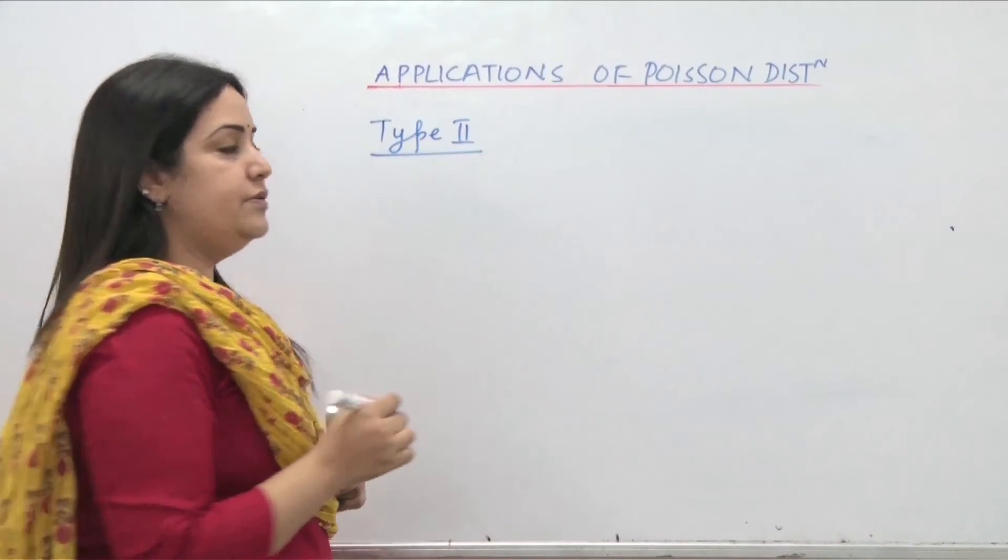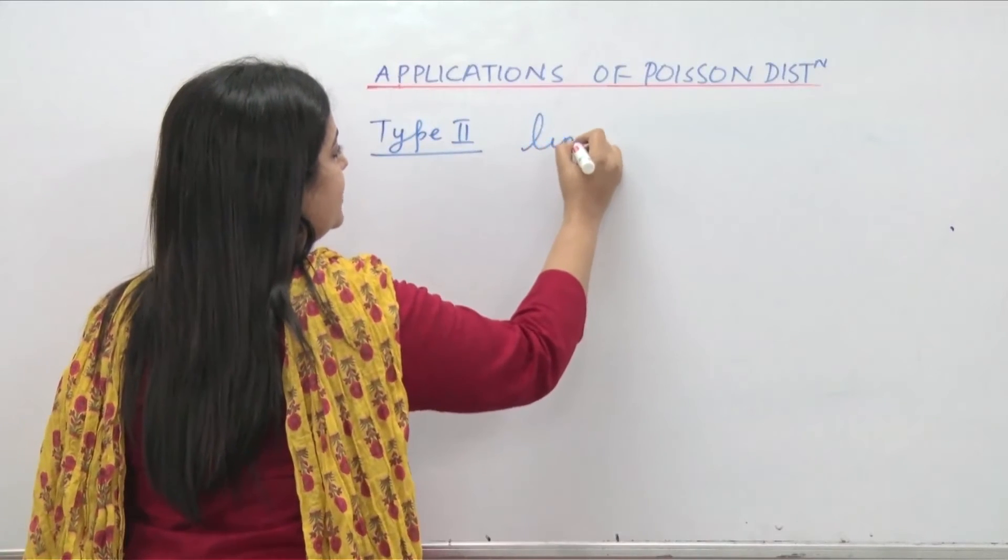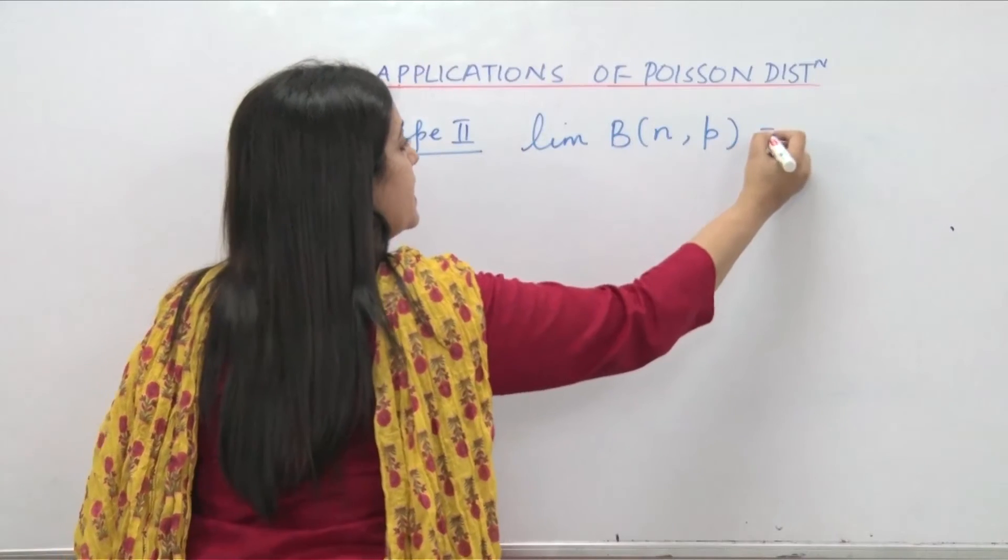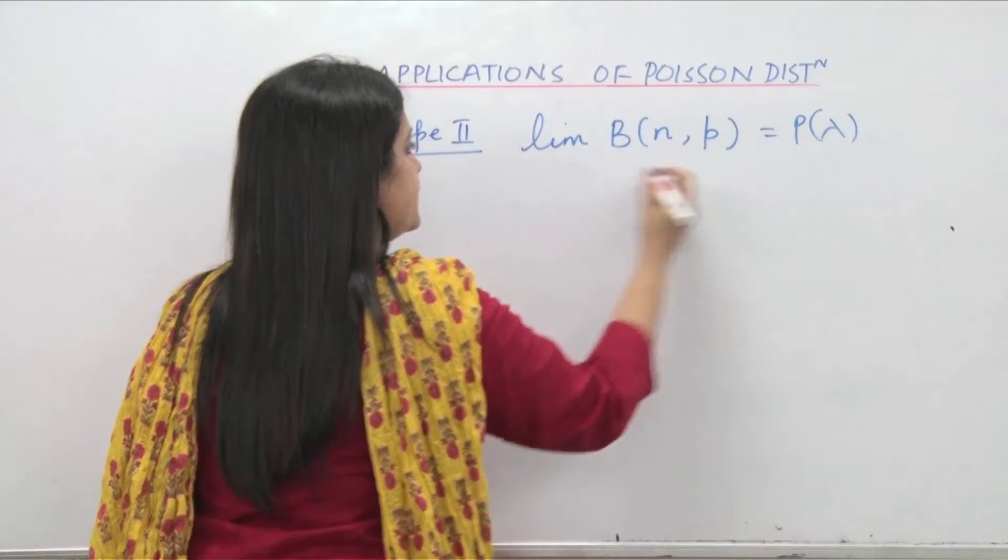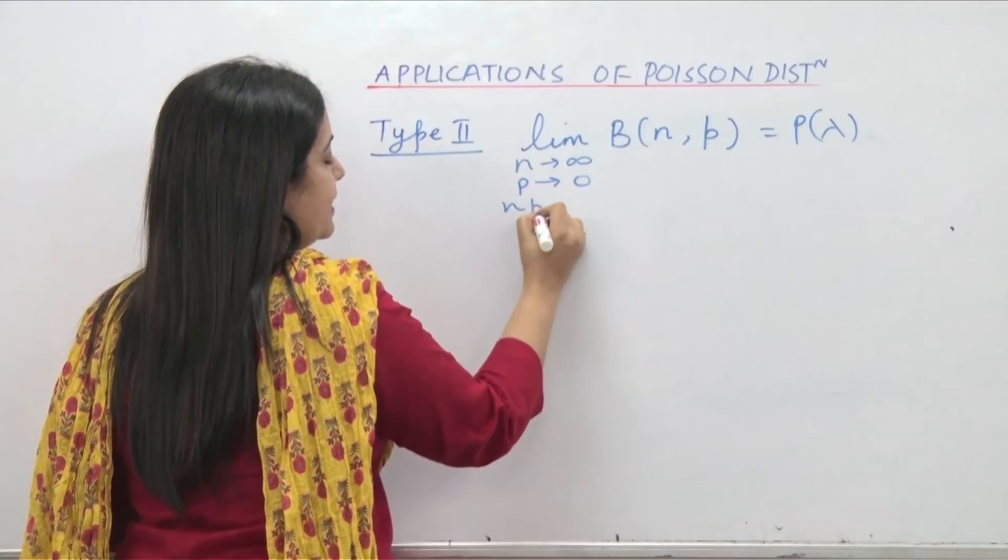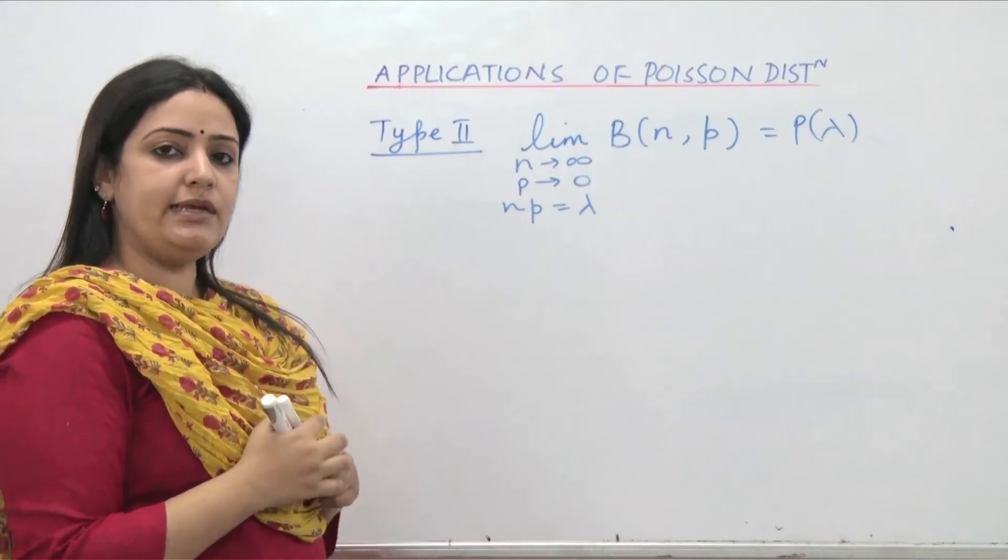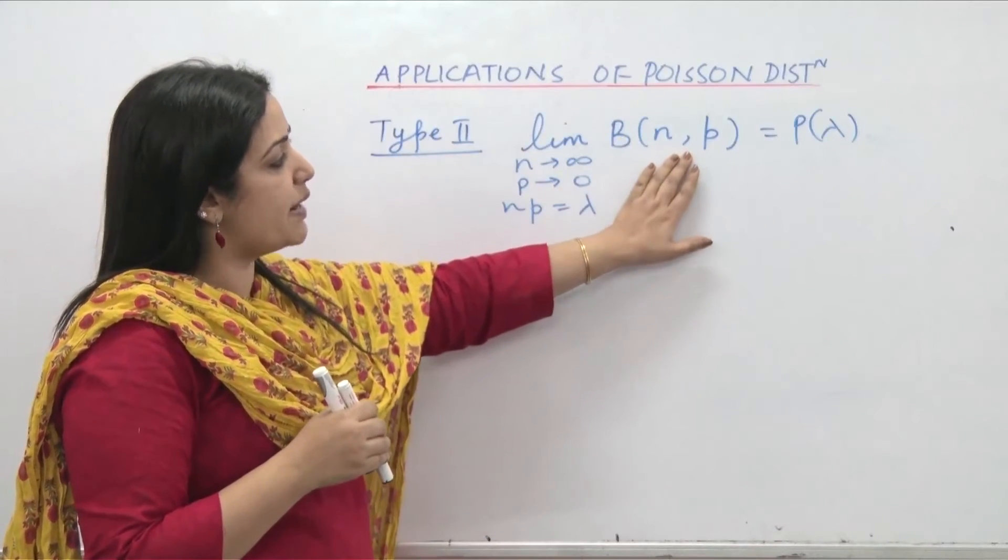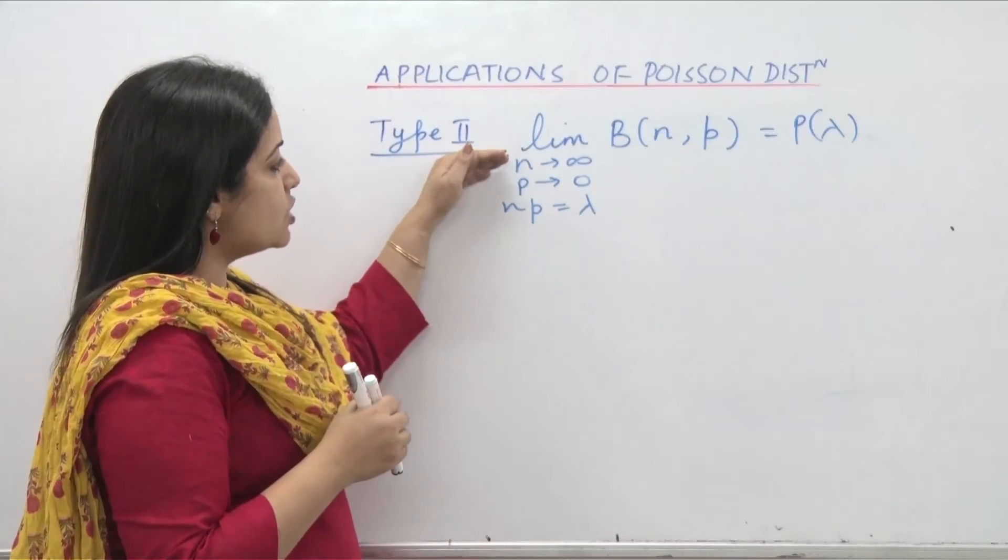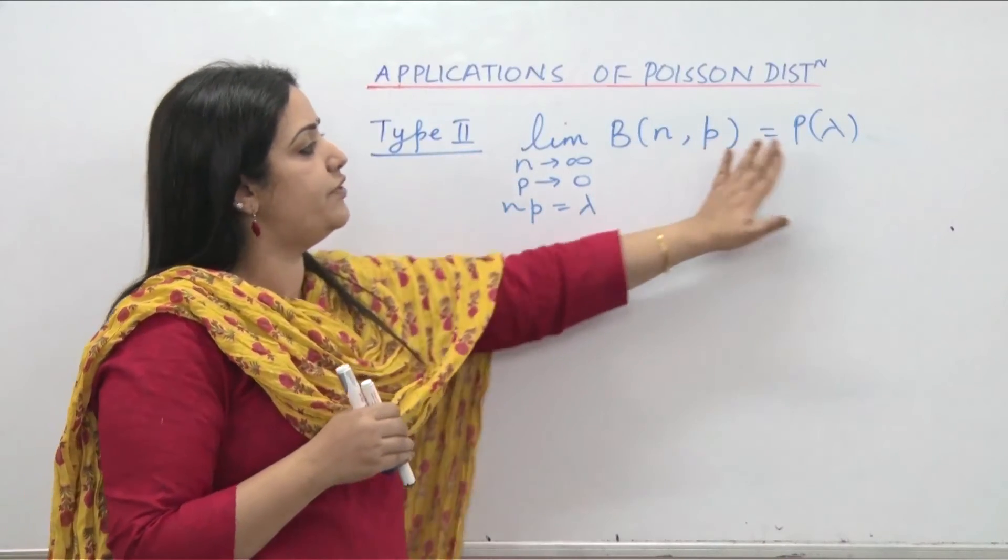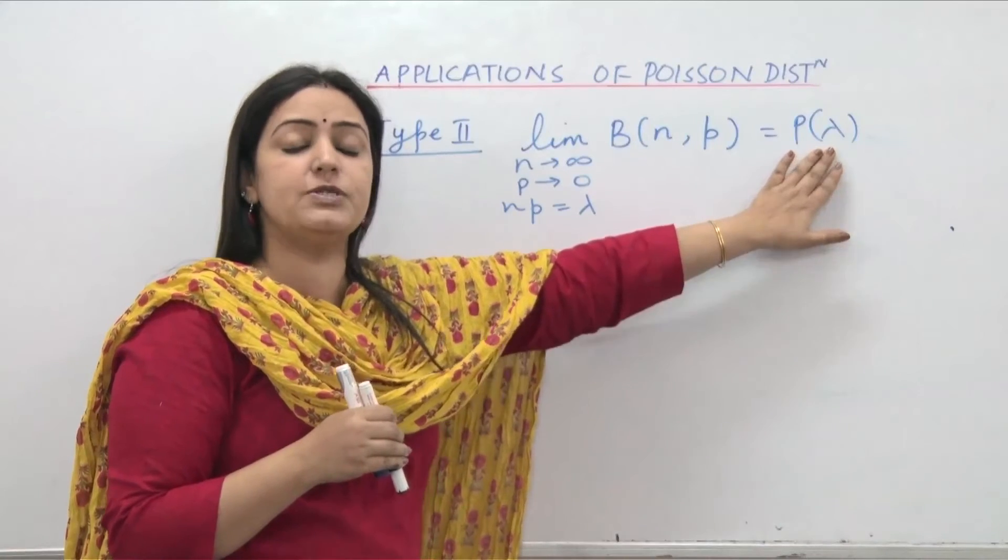Type 2 application of Poisson depends on the fact that limiting situation of binomial with parameters n and p becomes Poisson under the condition when n is large, p is small and np can be taken to be equal to lambda. And you can rather use Poisson distribution for the sake of simplicity.